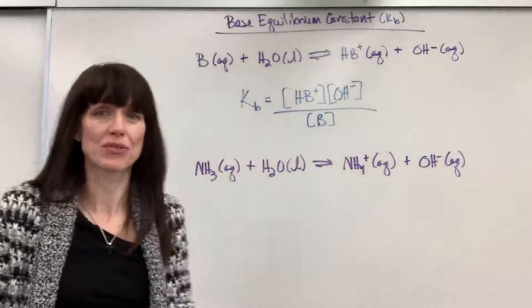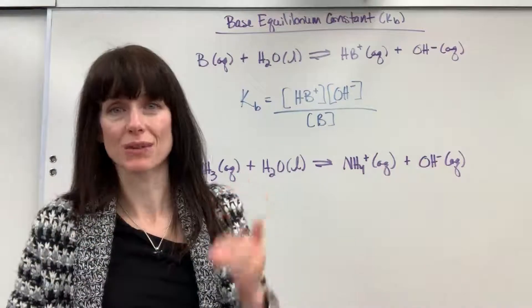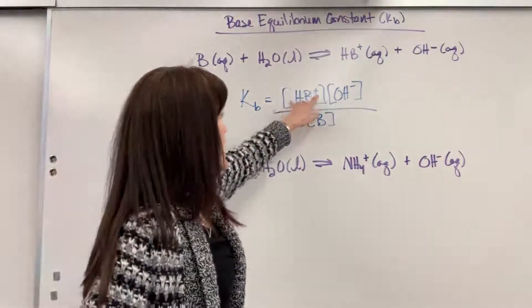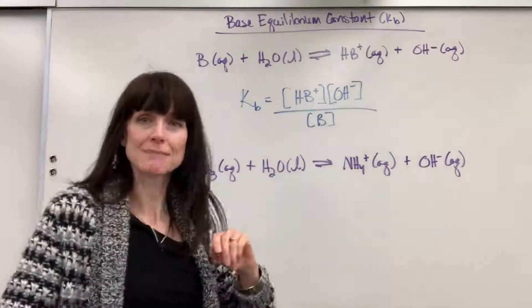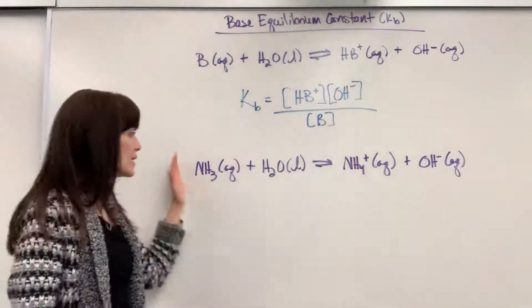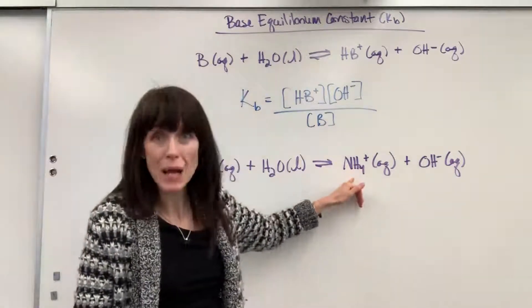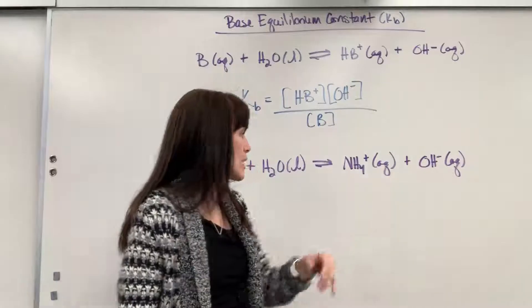Now, that is the generic formula for any base reaction. When you have a base reacting with water, this is always what you're going to end up with. It's going to be the conjugate acid times hydroxide divided by the base. So I wanted to show you that in a real example. We're going to have ammonia reacts with water to produce ammonium plus hydroxide.